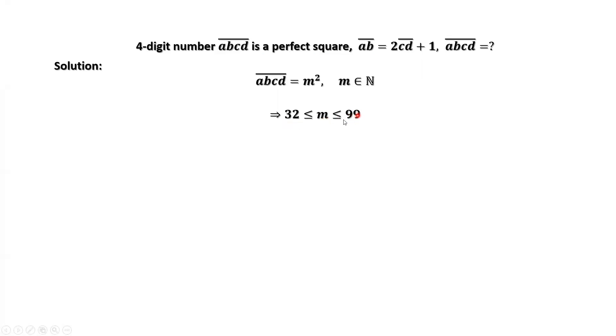Why? M cannot be less than or equal to 31. If M equals 31, M squared is a three-digit number. M equals 32, 32 squared is a four-digit number. This implies M must be greater than or equal to 32.